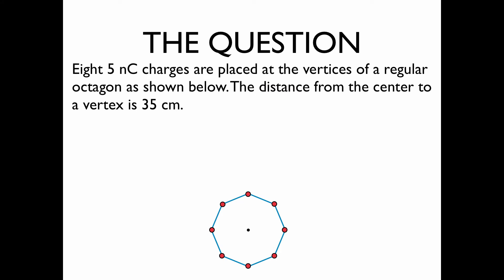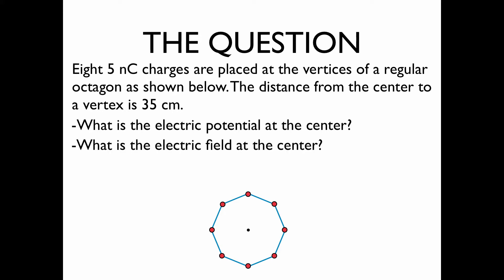Eight 5 nC charges are placed at the vertices of a regular octagon as shown below. The distance from the center to a vertex is 35 cm. We'd like to know what is the electronic potential at the center? What is the electric field at the center? And how do these quantities change if you remove the bottom charge?